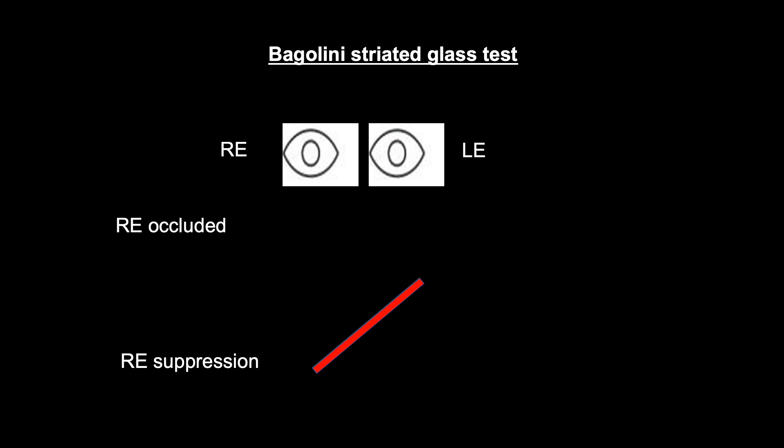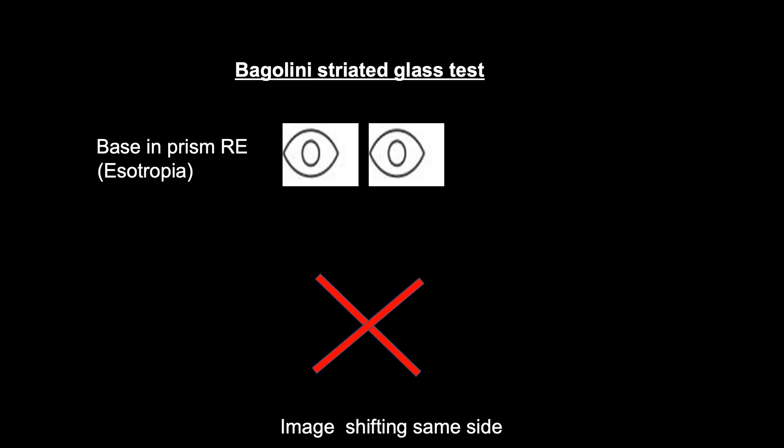To understand suppression, one eye is occluded, we can see a single image. In suppression, only one single image is seen.